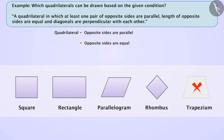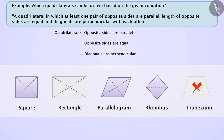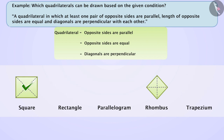The third condition is that the diagonals of the quadrilateral are perpendicular. Looking at the remaining four — square, rectangle, parallelogram, and rhombus — all four have diagonals, but the diagonals of rectangle and parallelogram are not perpendicular to each other. From this, we understand that the given information holds true only for square and rhombus. Therefore, the correct answer is square and rhombus.